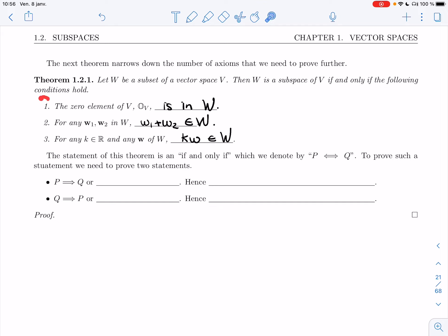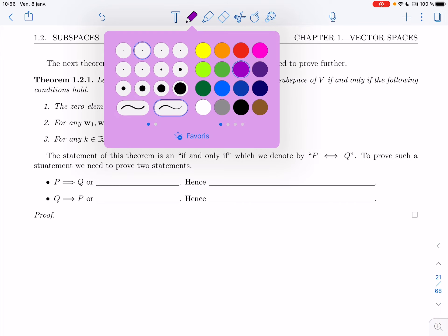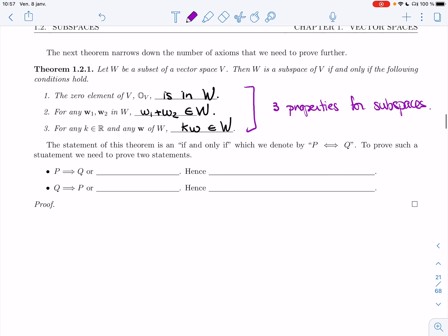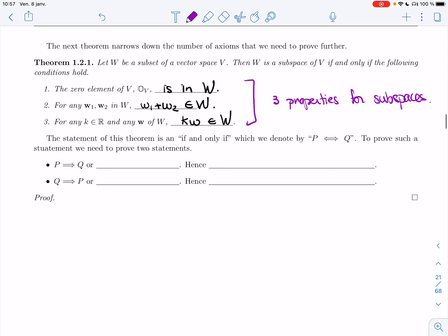So these are the three properties, let me call them that, that are true for subspaces and that need to be true for something to be a subspace. Instead of having to prove all 10 axioms, we just have to prove these three properties, much faster, much easier, much clearer.